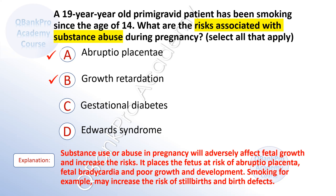The correct answer is A, abruptio placenta, and B, growth retardation. Substance use or abuse in pregnancy will adversely affect fetal growth and increase the risk. It places the fetus at risk of abruptio placenta, fetal bradycardia, and poor growth and development. Smoking, for example, may increase the risk of stillbirths and birth defects.